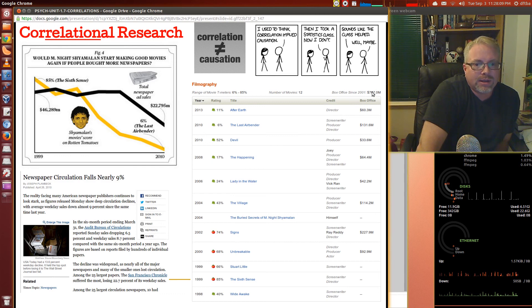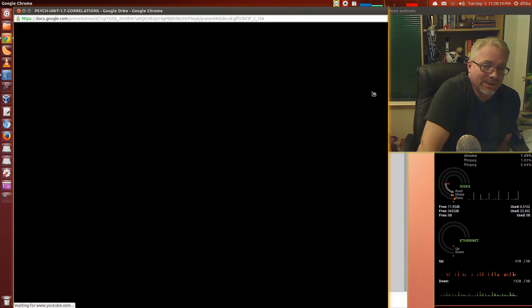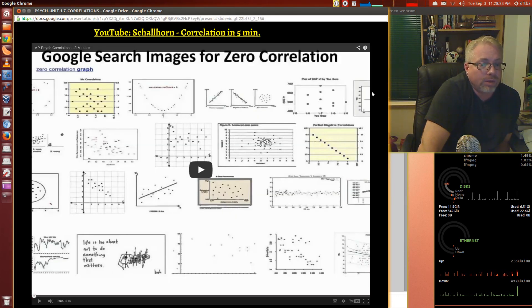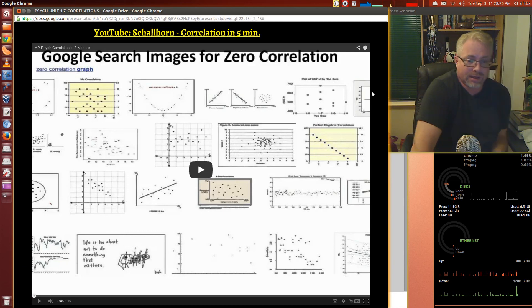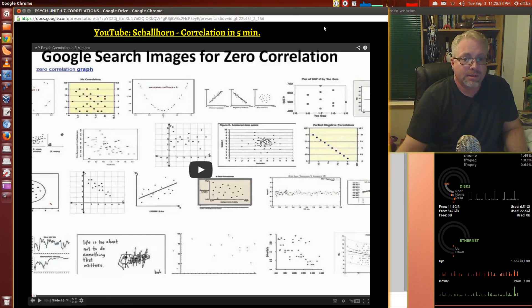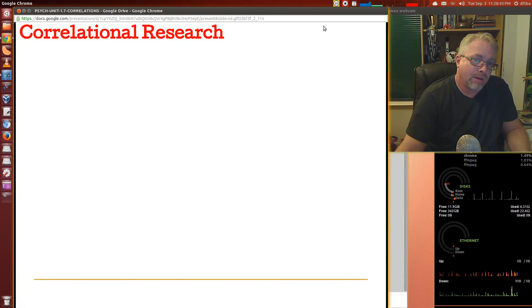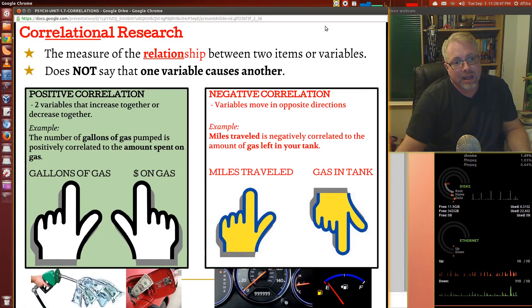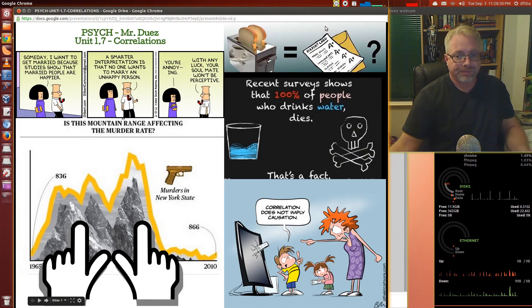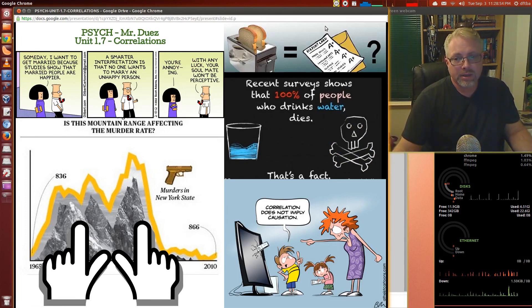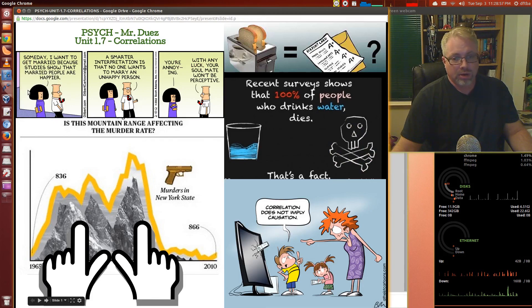I used to think correlation implied causation. Then I took a statistics class. Now I don't. It sounds like the class helped. Well maybe. You can't say correlation is causation. Here's Shawhorn again with a really good description of this, and another voice that might help you. I include his videos because they have helped students in the past. That's our look at correlation today. For me this is one of the areas that's probably more straightforward and simple to understand. If you're still struggling with correlational research, bring those questions to class and I'll be glad to help you out. Until next time, don't forget to be awesome.